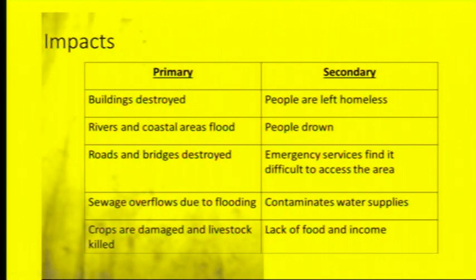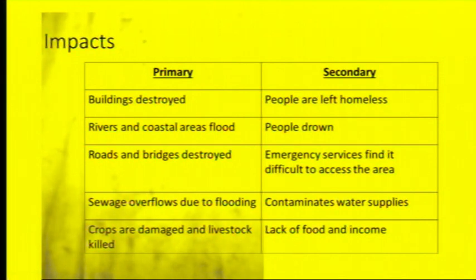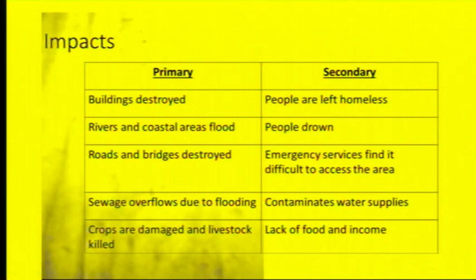We've got primary and secondary impacts, same as in tectonic hazards. Primary impacts: buildings will be destroyed, so people are left homeless and have to live in temporary accommodation. Rivers and coastal areas will flood, so people might drown. Roads and bridges will be destroyed, so emergency services will find it difficult to access the area. Sewage overflows due to flooding and contaminates the water supplies. Crops can be damaged and livestock killed, which could mean there's a lack of food and income.